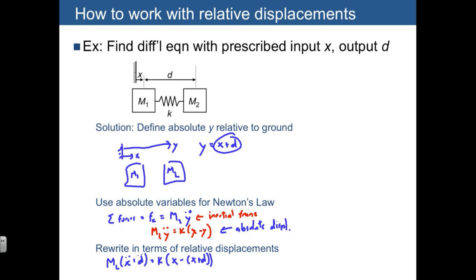We can quickly verify that this is just going to be equal to m2 times d double dot. I'm going to move all the d's to one side. So we have plus k times d is equal to negative m2 times x double dot. So notice that this is in the input-output form that we desire, where d is the output, and it's in order of decreasing derivatives. And then x is actually an input as a prescribed displacement, so we put it on the right-hand side of the equation.